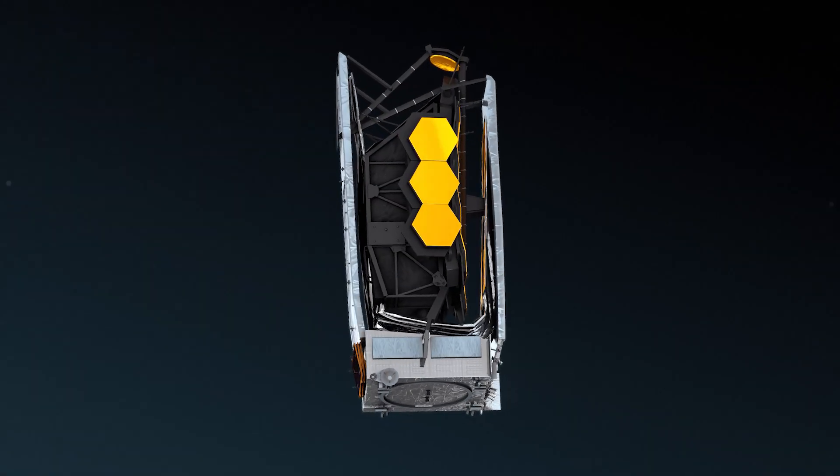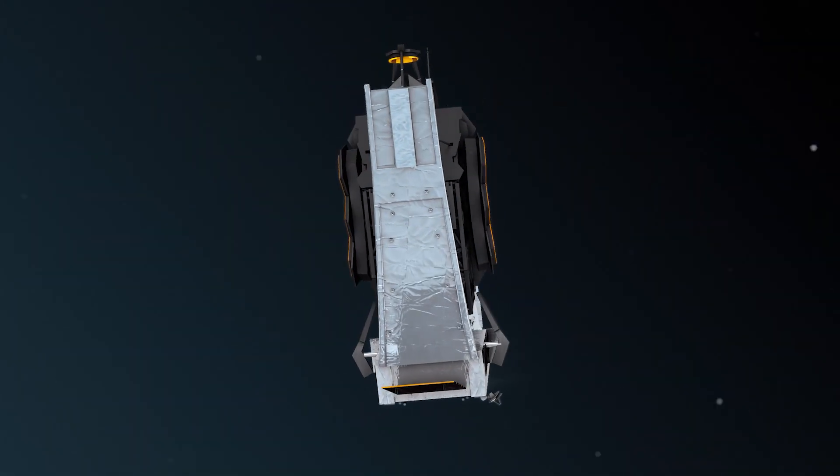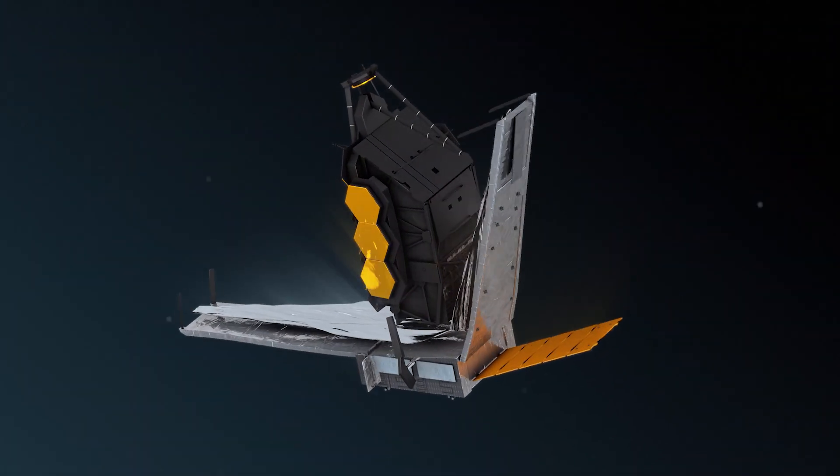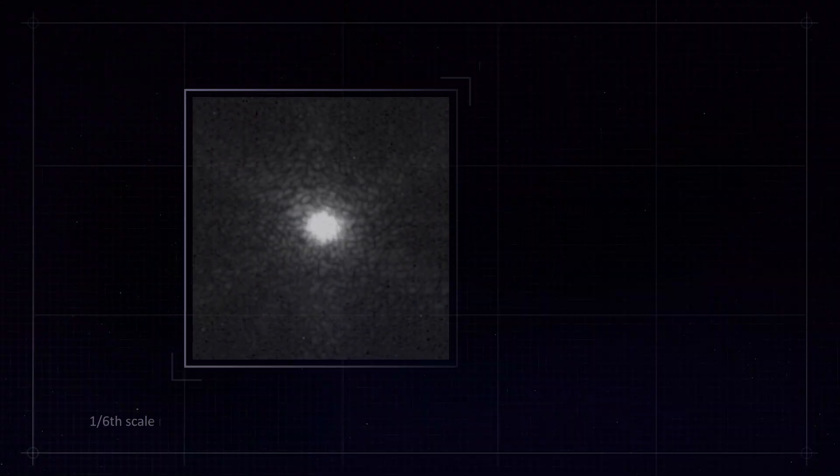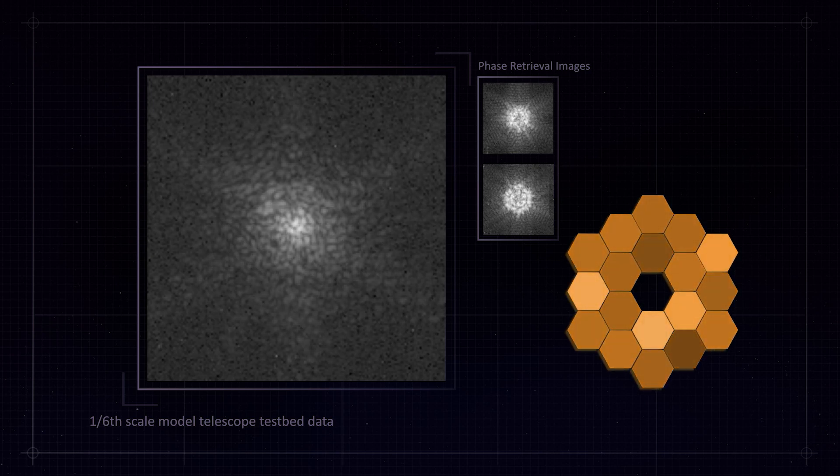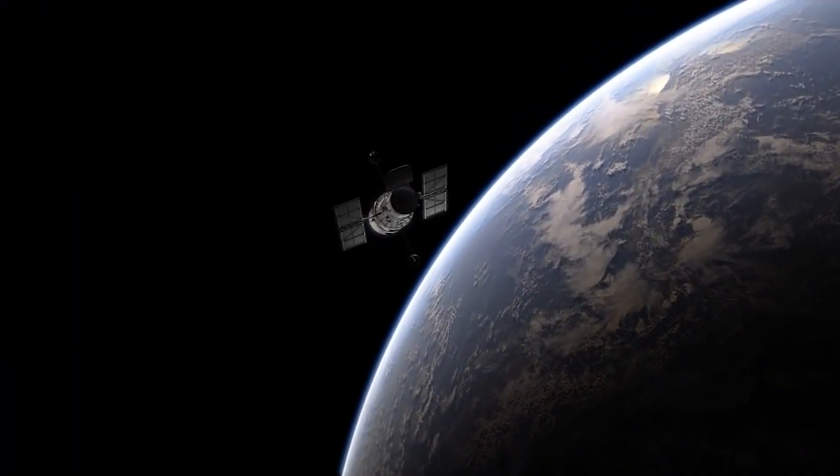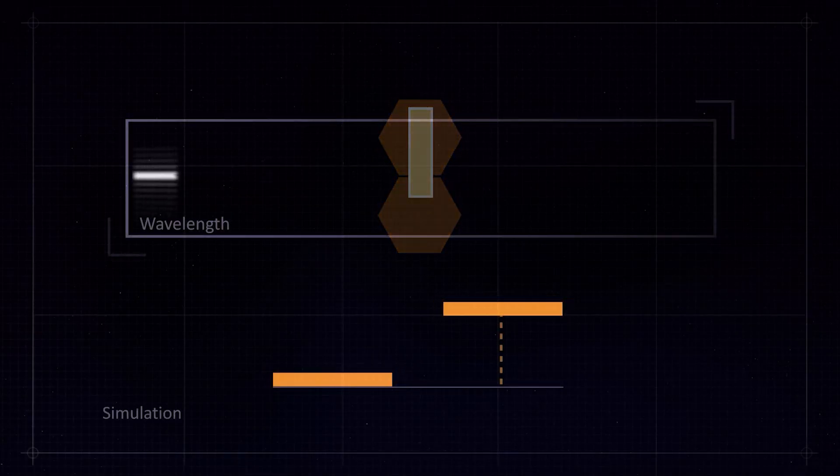The James Webb Space Telescope is the most ambitious and advanced space telescope ever built, with a 6.5-metre primary mirror capable of detecting the weak light of distant stars in galaxies. Infrared light released by distant stars, planets, and gas clouds is the primary goal of this instrument. The Hubble Space Telescope's findings will be bolstered by this new telescope, which has a wider range of wavelengths and greater sensitivity.